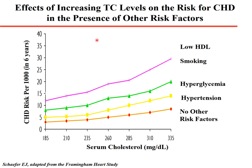For example, the Framingham study evaluated increasing total cholesterol levels and the coronary heart risk per thousand patients over six years. Not only cholesterol was a factor, but additional ones such as hypertension, smoking, and low HDL level. As you see, there is an additive or multiplicative effect — if you have more risk factors, you have a much higher risk to develop coronary heart disease.